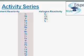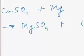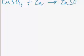For example, copper sulphate is reacting with zinc and it is producing zinc sulphate and copper. In this reaction zinc displaces copper from its solution, but copper cannot displace zinc from a solution of zinc sulphate.